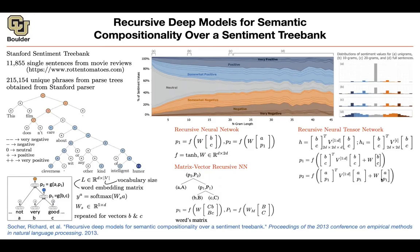You do the same thing for P2 after applying a non-linearity. You get P1, put it in, and the rest is the same as before. Now the question is: what is your loss function? You have five labels: very negative, negative, neutral, positive, very positive — labeled 1, 2, 3, 4, 5. The loss function looks at the output of the softmax, which gives you five probabilities P1 through P5.